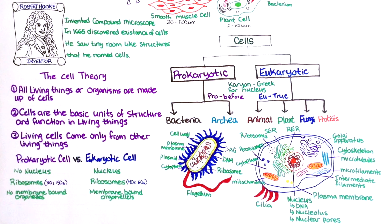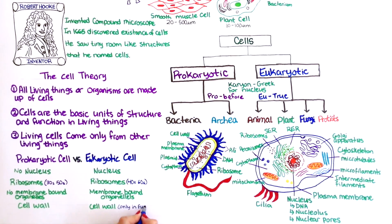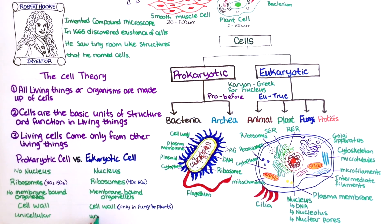Prokaryotic cells have cell walls, while in eukaryotes, only fungi and plants have cell walls — animal cells do not have cell walls. Prokaryotic cells are unicellular, while eukaryotic cells can be either unicellular or multicellular.